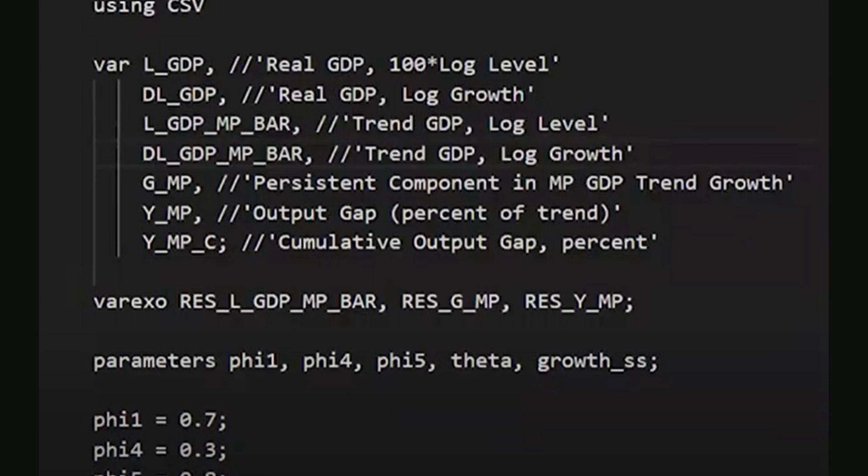Next, we define exogenous variables, which represent shocks. The keyword VAREXO is followed by a list of shocks prefixed with RES. These include shocks to the potential level RES_L_GDP_MP_BAR, the growth of potential GDP RES_G_MP, and the output gap RES_Y_MP. Like the endogenous variables, the list is comma separated and the block ends with a semicolon.